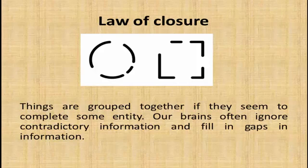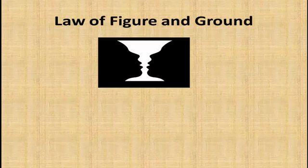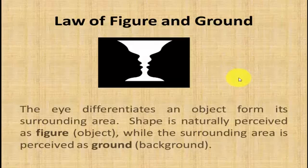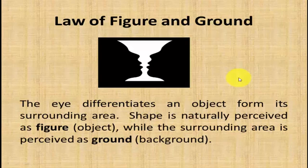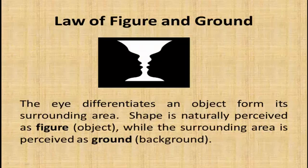The law of figure and ground: in the image, in the middle there is a vase or glass, while in the ground you can see two faces. The eye differentiates an object from its surroundings — the shape is naturally perceived as figure while the surrounding area is perceived as ground. If someone focuses on the vase, their concentration is on the object; if they see the faces, their concentration is on the ground.